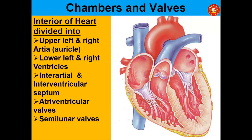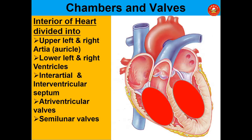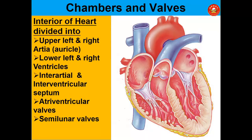The interior of the heart is divided into upper left and right atria and lower left and right ventricles. Between the two atria we have the inter-atrial septum; between the two ventricles, the interventricular septum. Between the atria and ventricles we have the atrioventricular valves, and between the ventricles and the aorta or pulmonary trunk we have the semilunar valves. Total: four chambers and four valves.